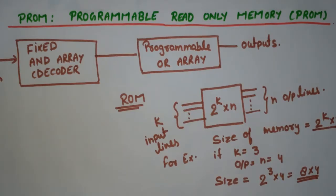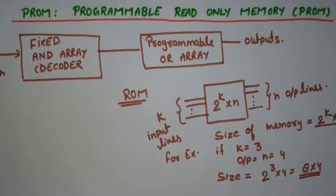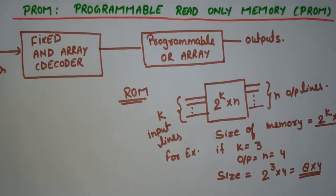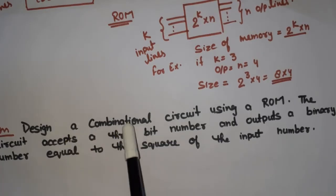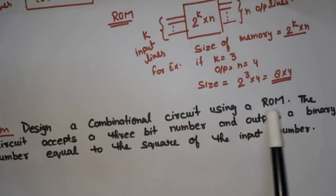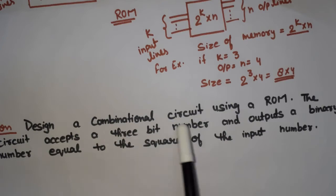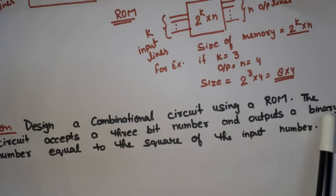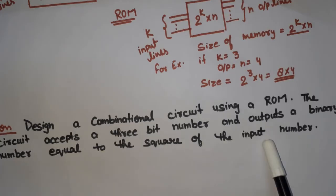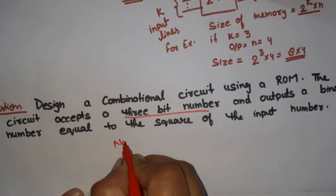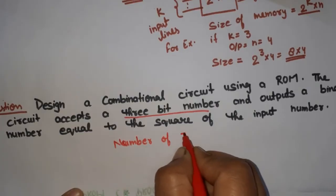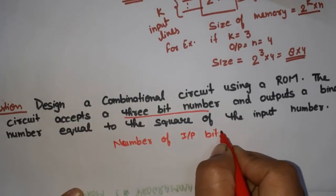Now I am going to explain PROM with an example. The question is: design a combinational circuit using a ROM. The circuit accepts a 3-bit number and outputs a binary number equal to the square of the input number. So the number of input variables is equal to 3.